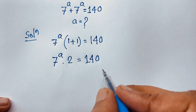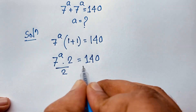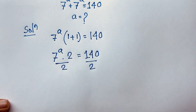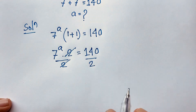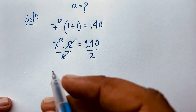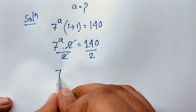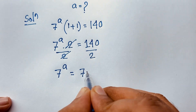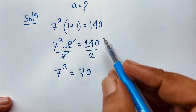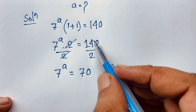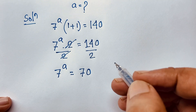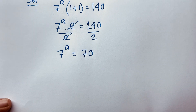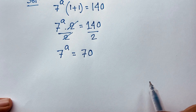Now I divide both sides by 2. These twos cancel out, and we find that 7 to the power a is equal to 70, since 140 divided by 2 equals 70.